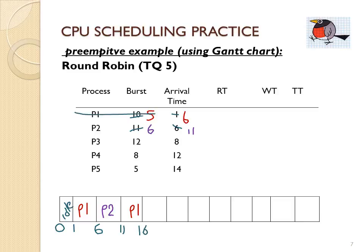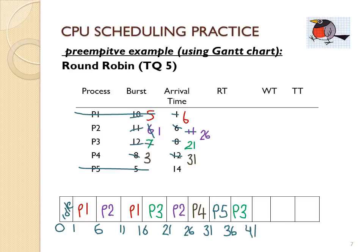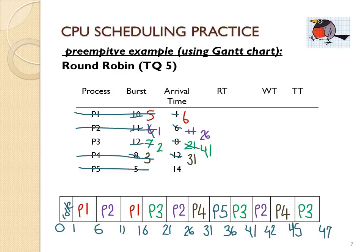At time 16, the ready queue contains P2, P3, P4, and P5. Because it's first-come-first-served, P3 goes next with 7 time units, followed by P2, then P4, and then P5. P5 only has a CPU burst of 5, so P5 is done. We continue round-robin through P3 and P2, which finishes at time 42. Then P4 goes — it arrived before P3 — followed by P3.